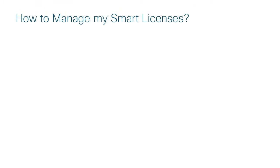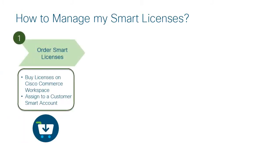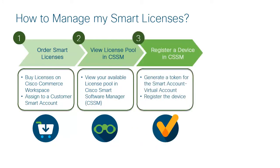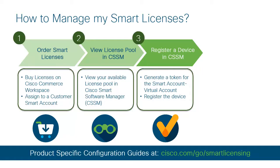Let's walk through the typical software license management cycle to understand how to manage your smart licenses. First, when you purchase a smart license in Cisco Commerce Workspace, you need to assign it to a customer smart account. If the customer smart account for the order is not known, the license must be assigned to a partner holding account until the customer smart account is determined. Next, log into software.cisco.com and access Cisco Smart Software Manager, or CSSM. CSSM will show all the smart licenses that you ordered and assigned to your customer smart account. Once you have viewed the license pool, you can register a device. In CSSM, you can generate a token for the device, which you will use to register the device. To configure the devices using smart license, refer to the product-specific configuration guides at cisco.com/go/smartlicensing.